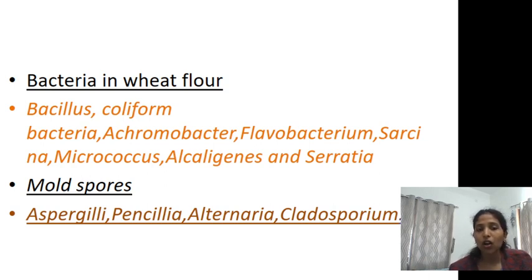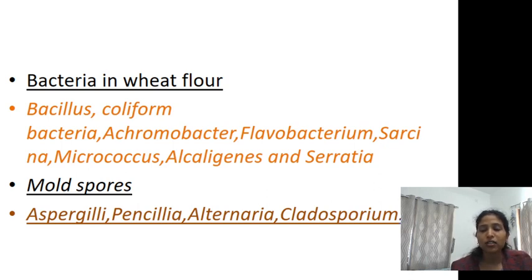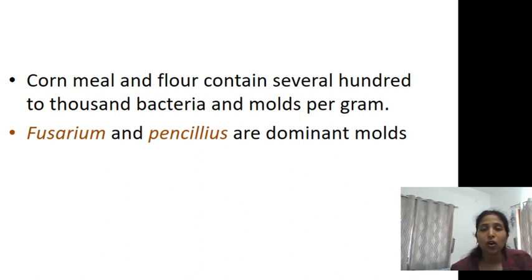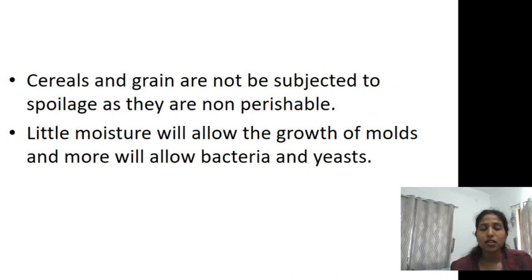There are different kinds of bacteria present in wheat flour: Bacillus, coliform bacteria, Achromobacter, Flavobacterium, Sarcina, Micrococcus, Alcaligenes, and Serratia. Mold spores such as Aspergillus, Penicillium, Alternaria, and Cladosporium are the molds present on cereals. Cornmeal and flour can contain several hundreds to thousands of bacteria and molds per gram, with Fusarium and Penicillium being the dominant ones.